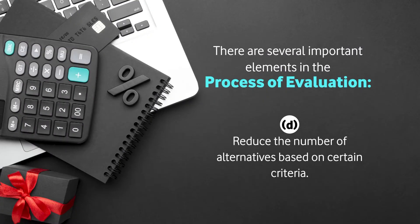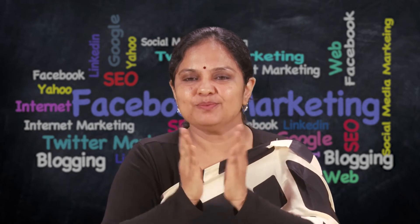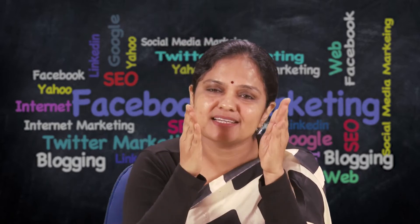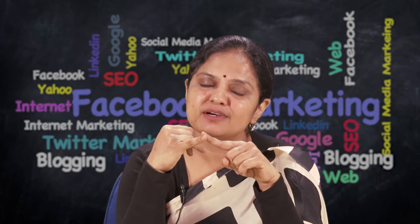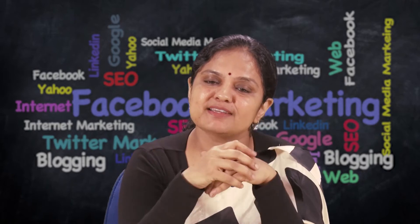You reduce the number of alternatives based on certain criteria and then make a choice of which one to purchase. Occasionally consumers may use an evaluation process permitting trade-offs among different alternatives, and sometimes you negotiate based on the evaluation you have done. This is a very critical stage in the buying process because it decides whether the customer will buy your commodity or not.